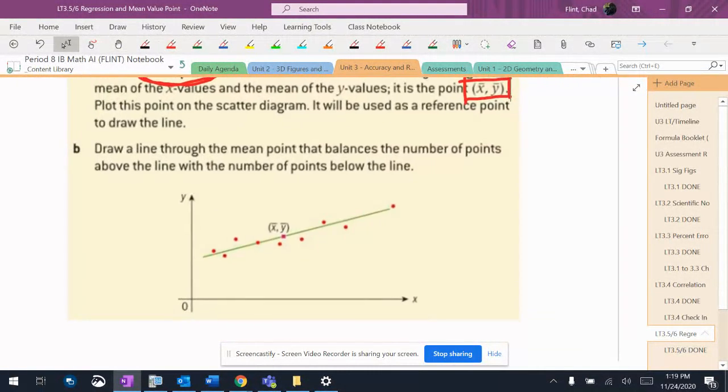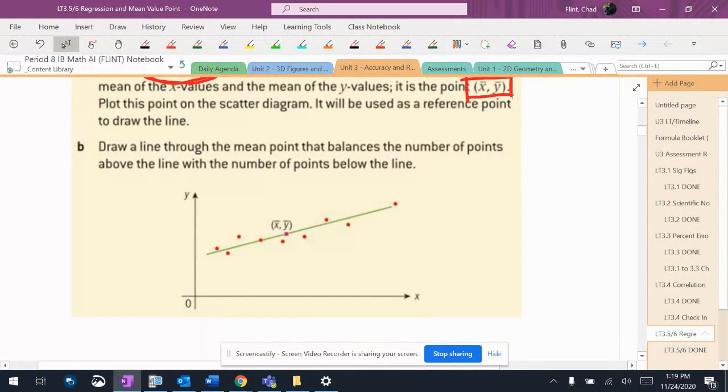So if you draw it by hand, it has to go through that point, then you just kind of angle it so that it goes down the middle of all the points when you actually do that.